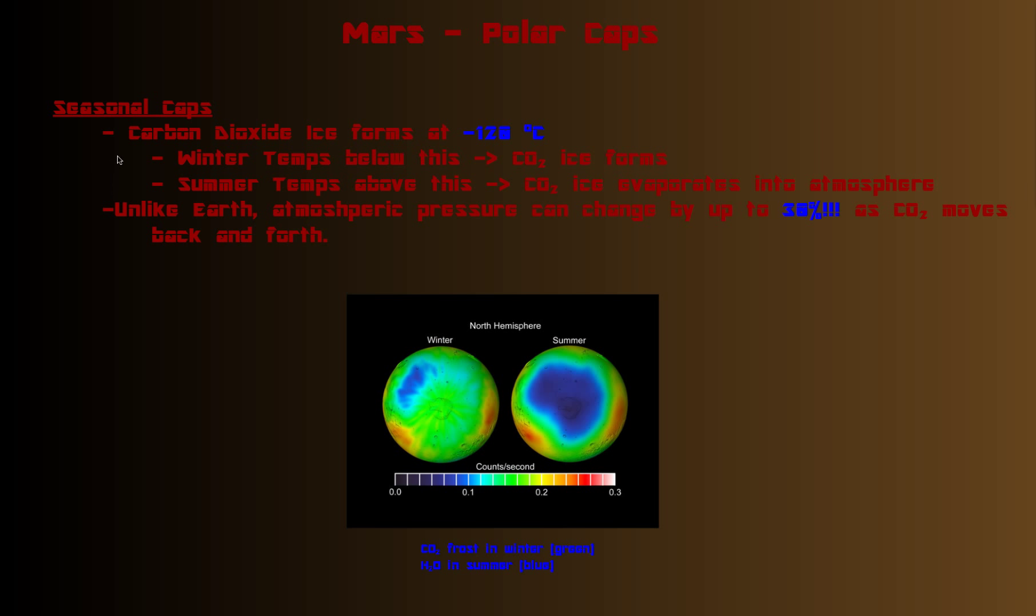The seasonal caps, these are the ones that vary during the season, because Mars has seasons and gets farther and closer from the sun, in addition to the tilt. The carbon dioxide ice, or dry ice, forms at negative 120 degrees Celsius. So when the winter temperatures are below this temperature, you'll get CO2 from the atmosphere freezing and forming like a thick frost layer on the caps.